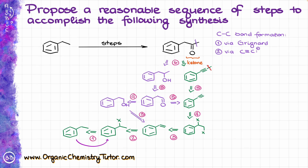Step number one is going to be radical halogenation. I'm going to use Br2 and light, which will give me the corresponding bromide — so instead of X, I'll show Br.